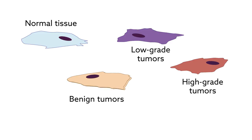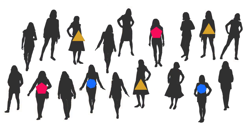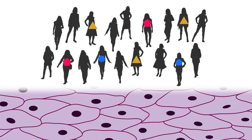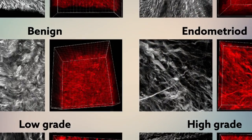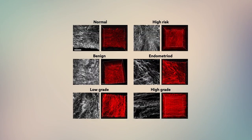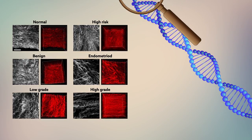They even predicted when growths were at high risk of becoming cancer. They identified features corresponding to these different tumor types and found that they were consistent among different patients. This means that 3D texture analysis could provide a universal way of telling healthy tissue from potentially life-threatening tissue. As a result, computer vision offers a powerful method for examining cancer that can complement other techniques such as genetic screening.